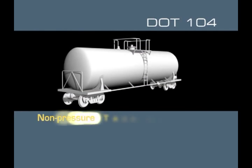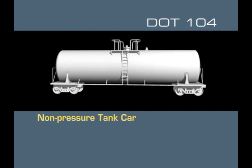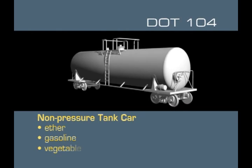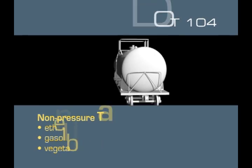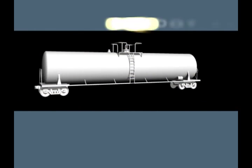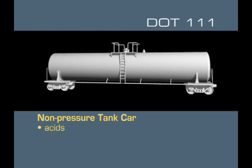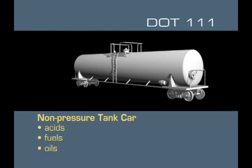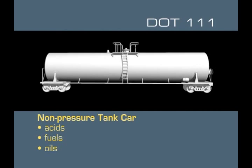Another non-pressure tank car is the DOT-104. It has the same shape and silhouette of the DOT-103, but carries ether, gasoline, and vegetable oils. The DOT-113 is a non-pressure tank car that carries acids, fuels, and oils. It can be longer than a DOT-104, but shares the same valve configuration and silhouette.